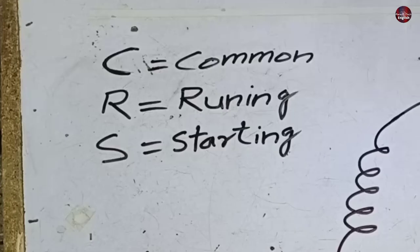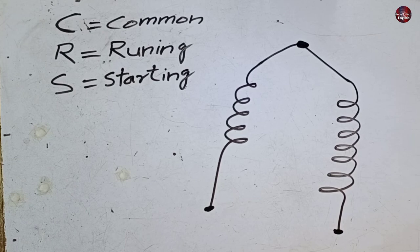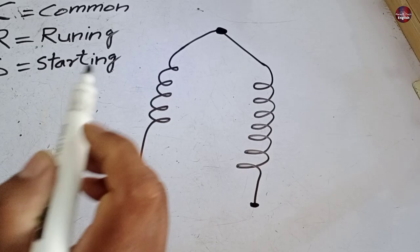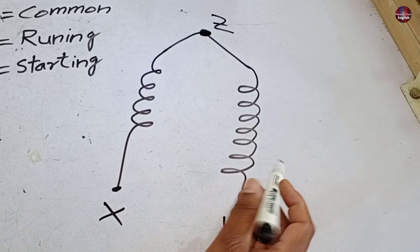I have written CRS here, which is common, starting, and running. If I directly write the CRS on the coils, it will make no sense as I don't know which coil is common, run, and start. So I will randomly write X, Y, and Z on the coils to find out CRS. Now I will make pairs of these X, Y, and Z. Three pairs will be made: the first pair is X and Y, the second is Y and Z, the third is X and Z.